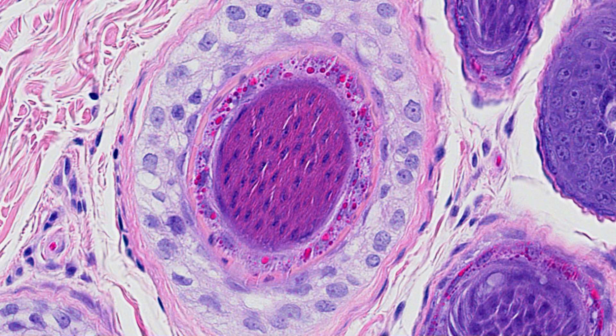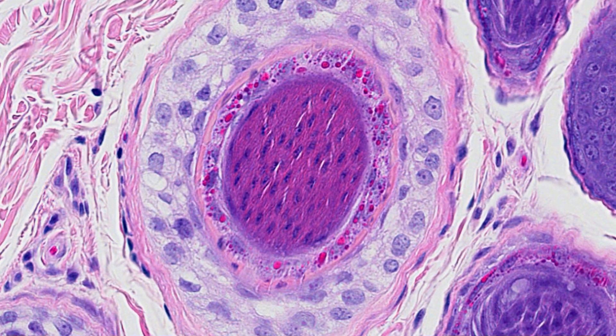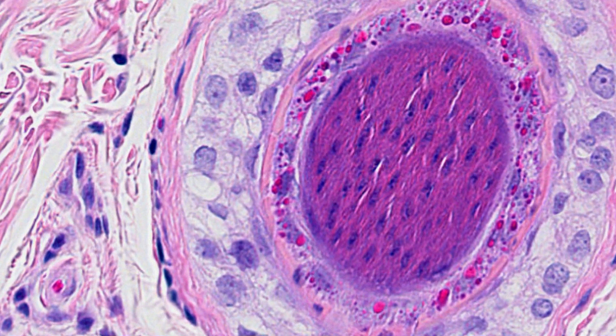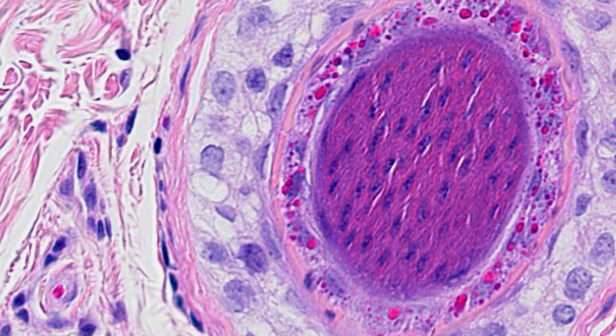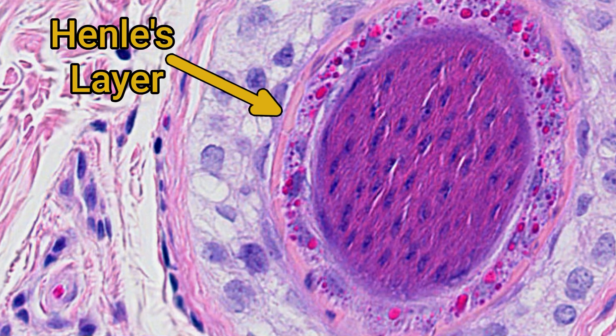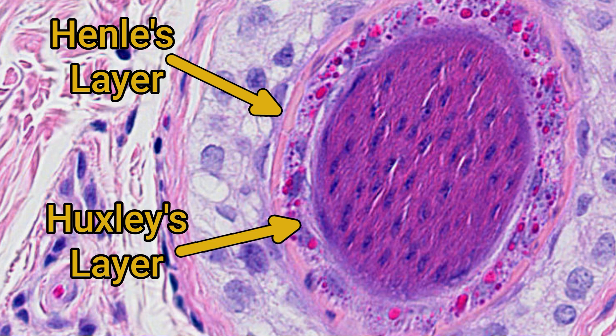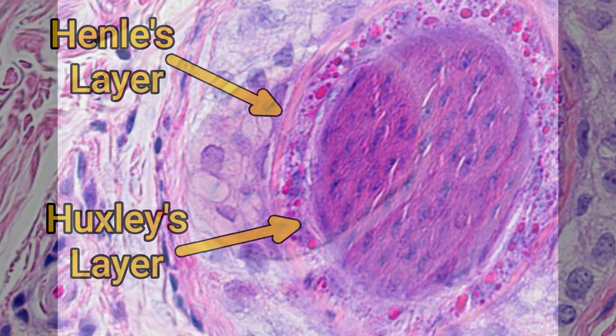Henley's layer is the first to cornify — losing the nucleus and much of the cytoplasm. The eosinophilic layer that has appeared is formed of cornifying cells; you can sometimes make out faint nuclei, so this must be Henley's layer. The other cells containing trichohyalin granules are Huxley's layer. The outer root sheath is beginning to thicken as well.